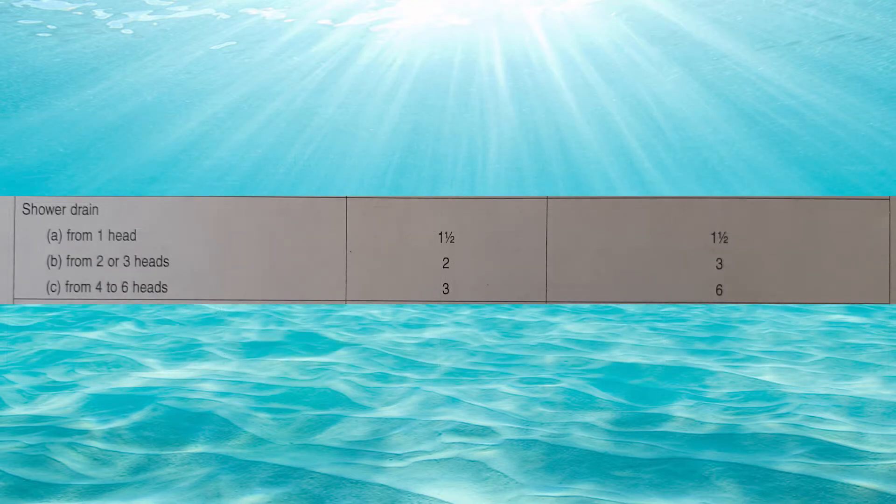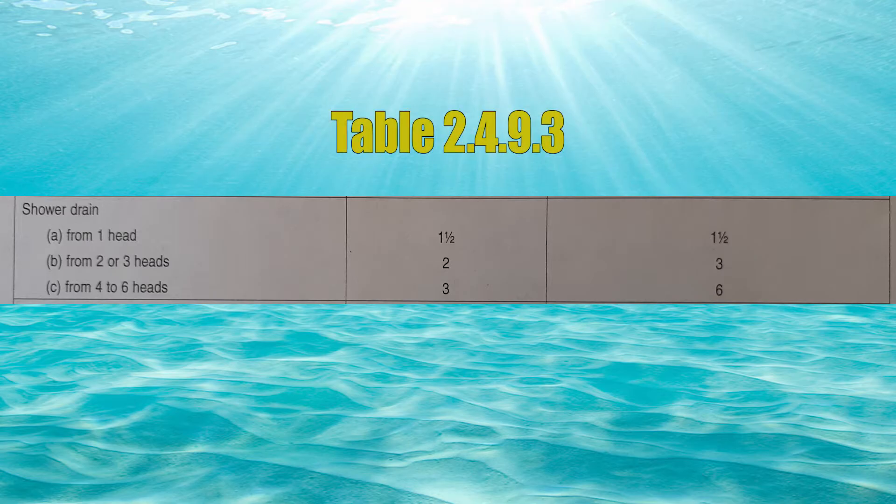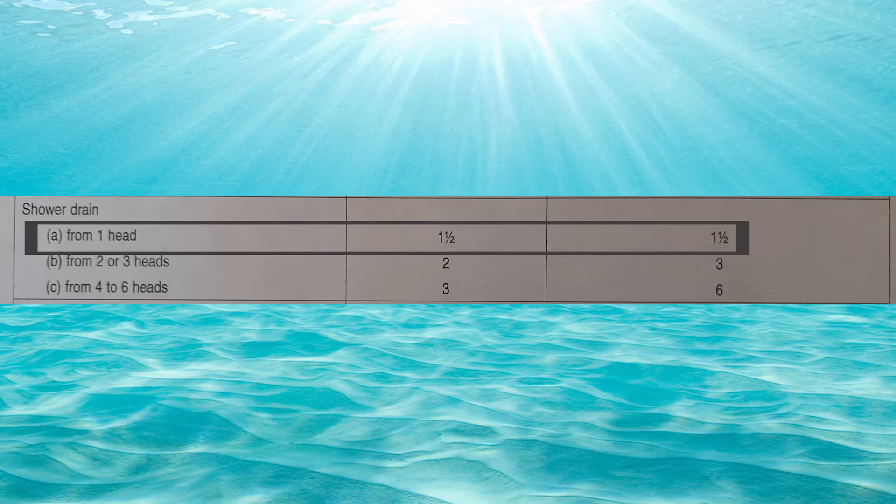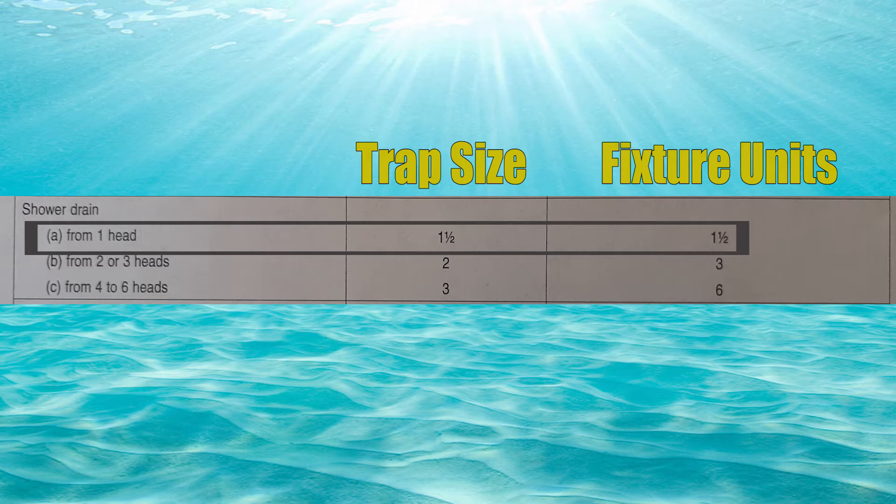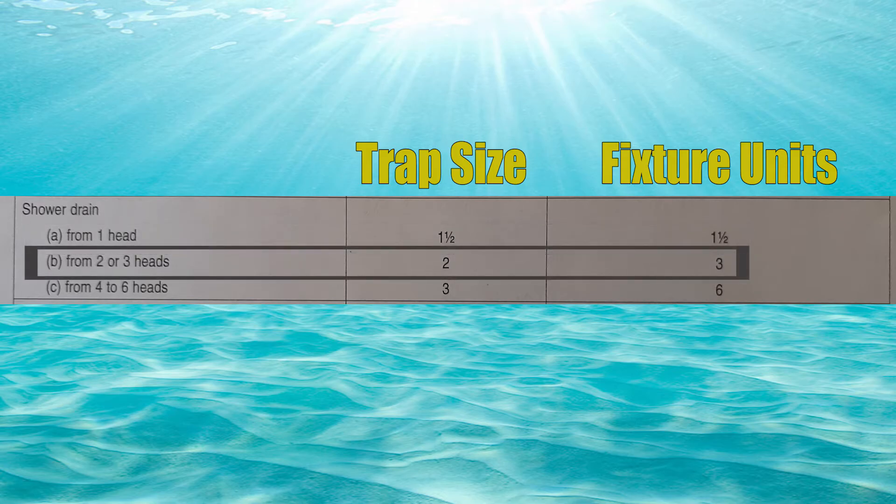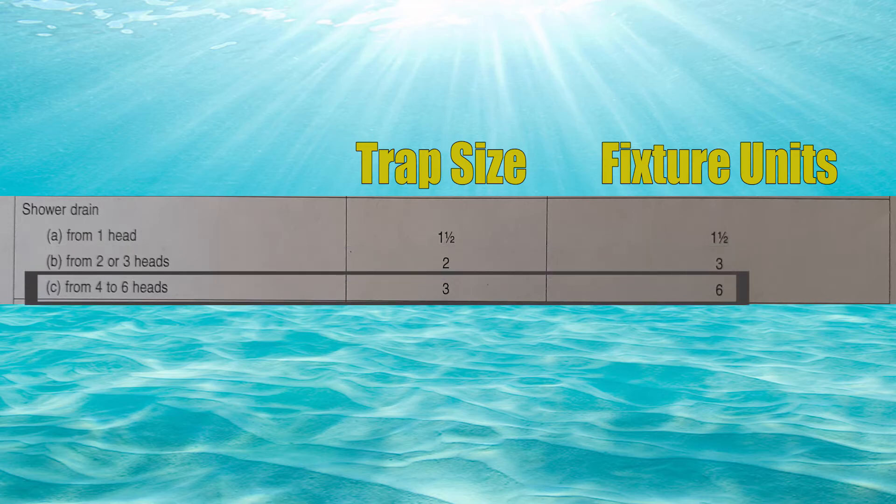Now showers are special. They have their own table entry in table 2493. If I have a shower with one head, it's a one and a half inch trap minimum with one and a half fixture units. If I have a shower drain that's serving two or three heads, it needs to be two inches in size and a hydraulic load of three fixture units. If I have a shower drain that comes from four to six heads, now you need a three inch trap with six fixture units. So this would be more so in a gang shower.